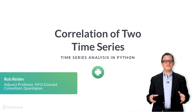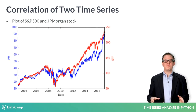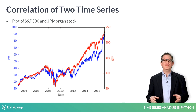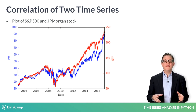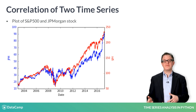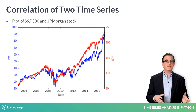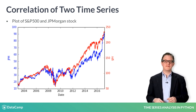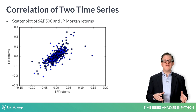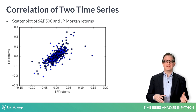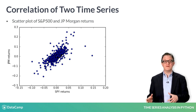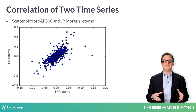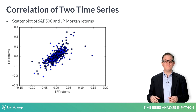Often, two time series vary together. Here's a plot of the stock prices of J.P. Morgan and the S&P 500. You can see from this plot that, in general, when the market drops, J.P. Morgan drops as well, and when the market rises, J.P. Morgan also rises. A scatter plot of the returns of J.P. Morgan and the returns of the market helps to visualize the relationship between the two time series.